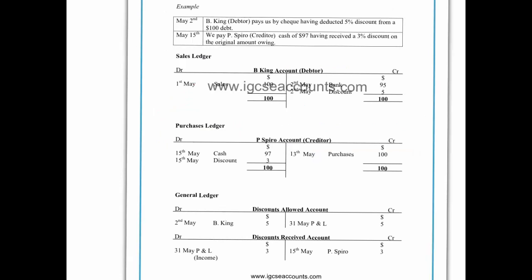If we look here, we can see that in this example B King — our debtor — pays us a cheque, but he or she has already deducted a 5% cash discount allowed from the debt. Presumably we gave them an incentive to pay us early, in which case they got an extra 5% off. So if they owe us a hundred dollars, they're going to send us a hundred minus the 5%, which is $95. That $95 comes out of B King's account and into our bank account. But the original debt of $100 minus the $95 on the credit side would still leave us with a balance of $5, which is incorrect because the debt has now been settled.